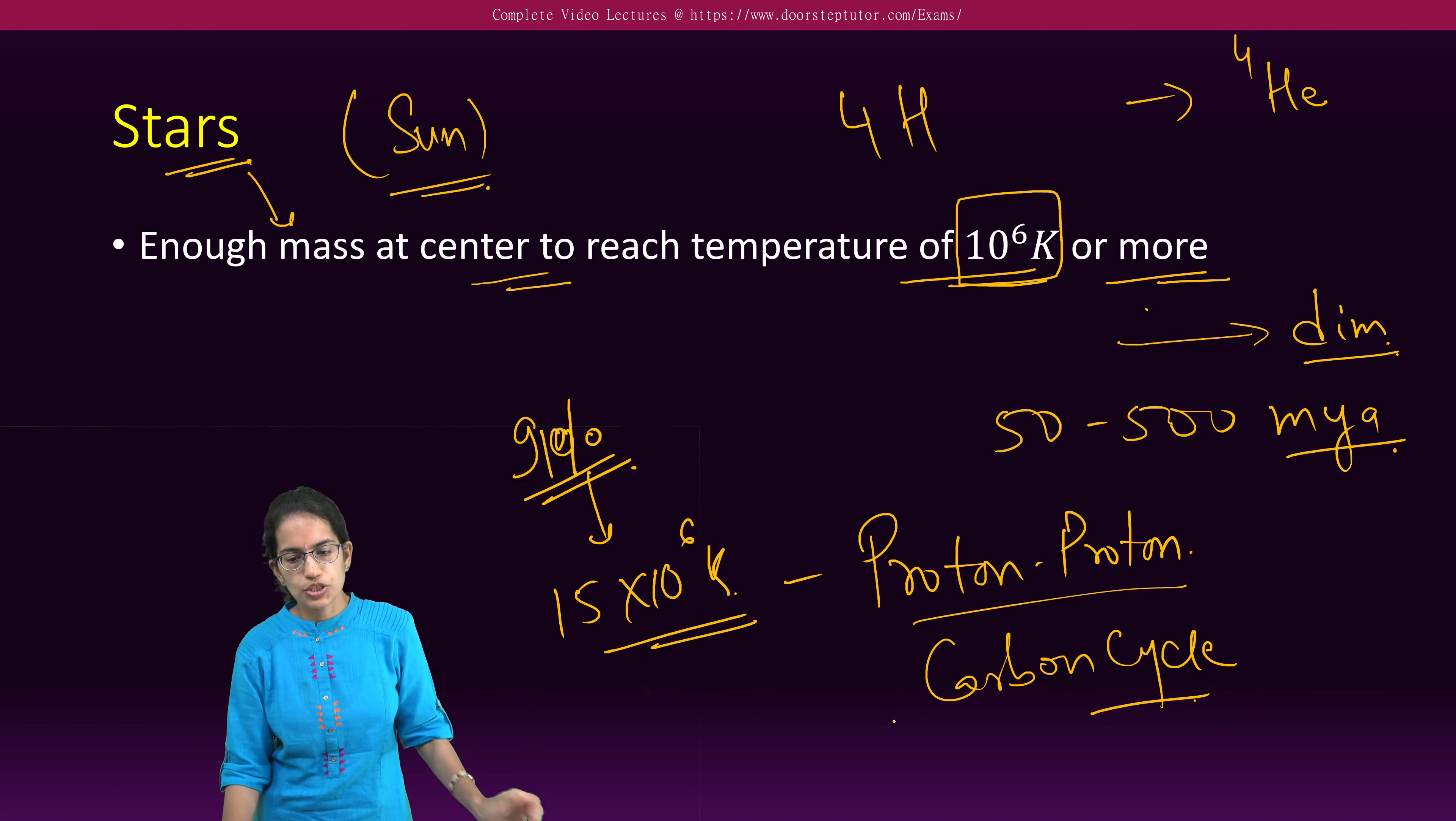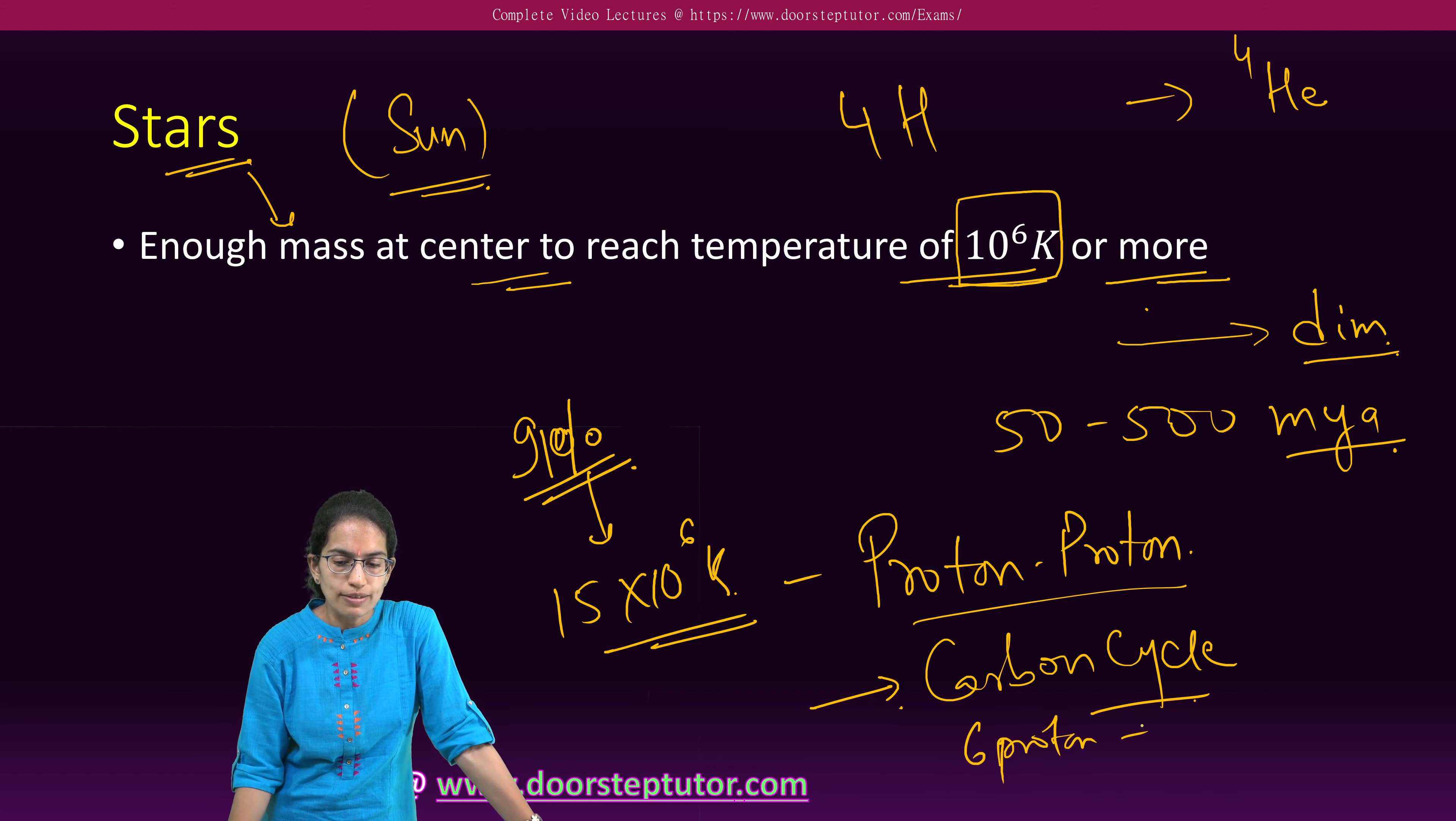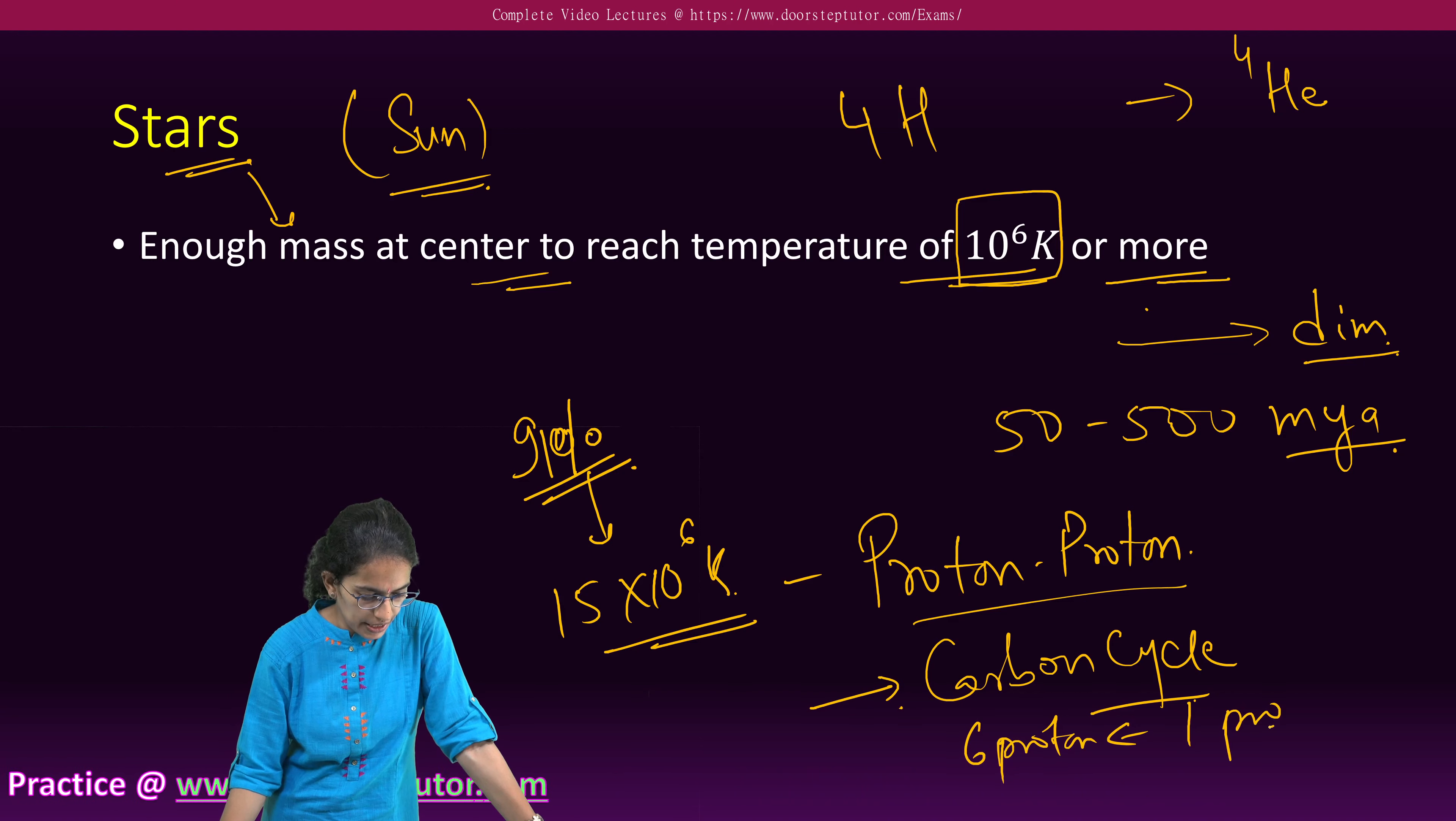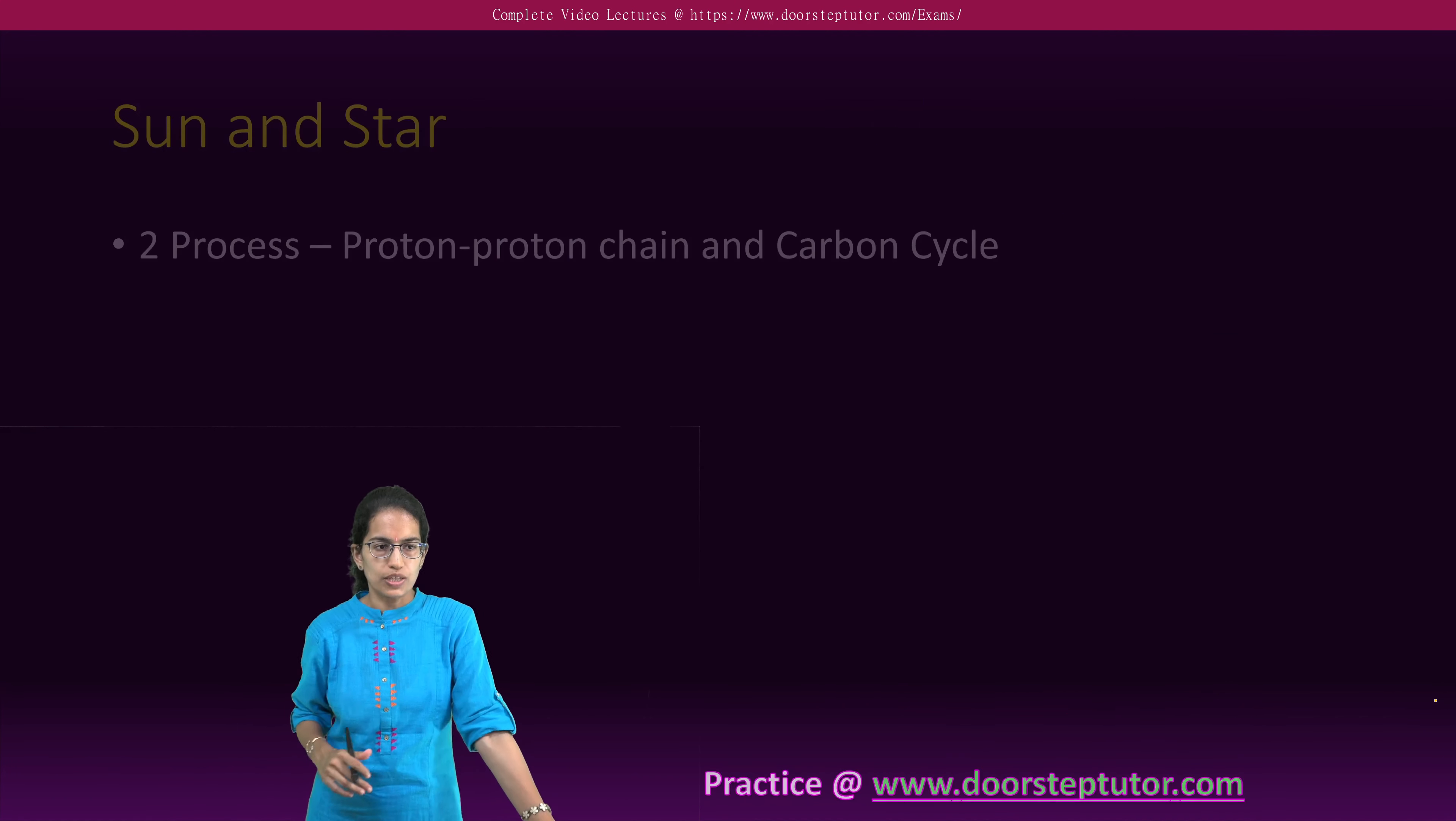The next is carbon collision. Here proton collides with the carbon. Now carbon already has six proton. You have one more proton collision that takes place and this actually requires more energy and therefore is less popularly seen in most of the cases.